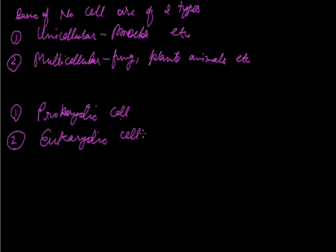Like nuclear membrane, cell organelles. While the eukaryotic cells are advanced cells and they have all characters of true cells.